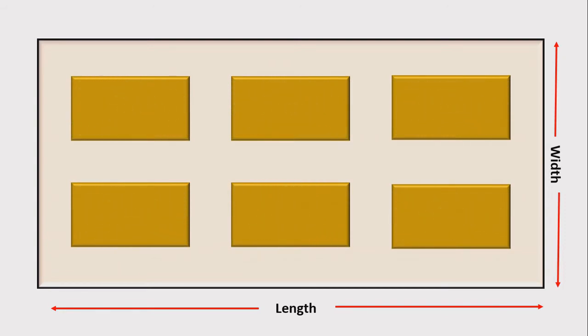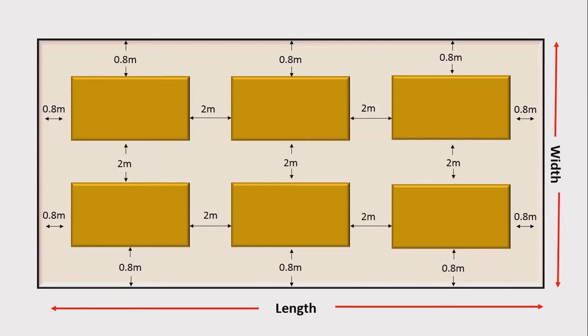Each stack is a lot for storing grains of equal capacity. There should be 0.8 meters distance between the wall and the stack, and 2 meters distance between two stacks. This is for easy handling, protecting them from storage pests, and easy application of pest control procedures. These are the ideal gaps we need to follow during construction.